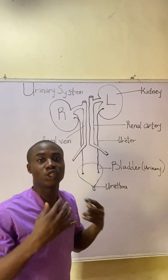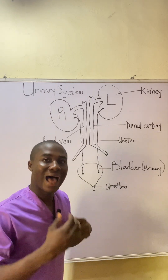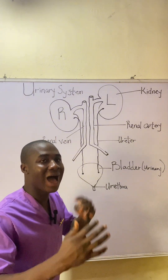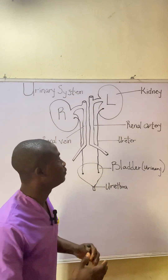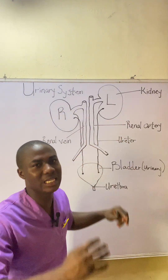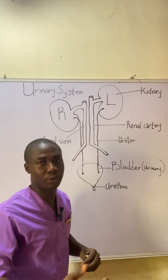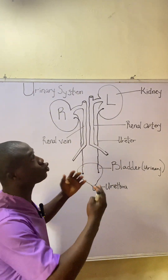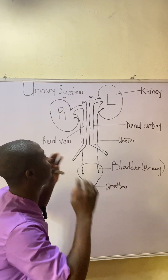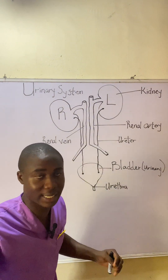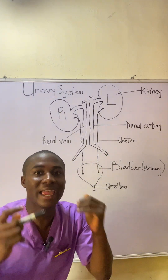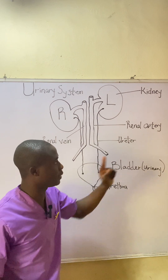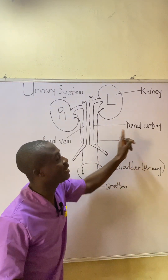How does this system work? The chief circulatory organ in the body is called the heart, and its major function is to pump blood. This heart will pump blood and it goes to different organs in the body. The kidney is very important, which we'll talk more about as we progress. When the heart pumps blood, it goes to the kidney. The heart will pump oxygenated blood, and the kidney will receive it via a blood vessel called an artery — specifically the renal artery.